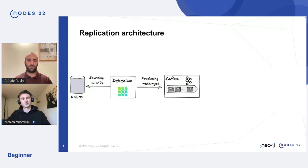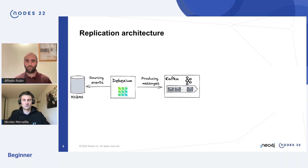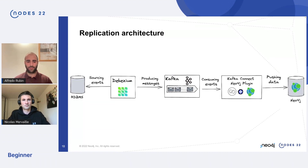Everything starts from the source of our data — in our case, the RDBMS. Whenever something happens in the RDBMS, Debezium will see the event occurring in the transaction log and produce a message about that event to Kafka. For the way Debezium works, we will have one topic for each table it is subscribed to. So if Debezium is subscribed to 10 tables, it will produce 10 topics inside Kafka. Meanwhile, another Kafka Connect instance with the Neo4j plugin installed is also subscribed to those topics. When Debezium produces a message, that Kafka Connect instance will consume it and push data to Neo4j.